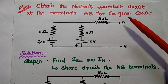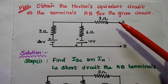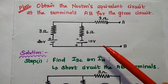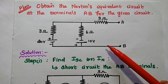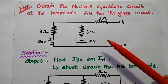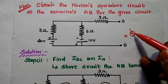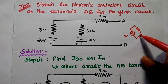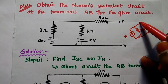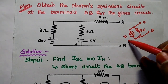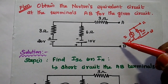Let's solve one important problem. We need to obtain the Norton's equivalent circuit at the terminals AB for the given circuit. So this is the given circuit, and we are going to draw the Norton's equivalent circuit, converting it into a current source in parallel with an equivalent resistance at terminals A and B.